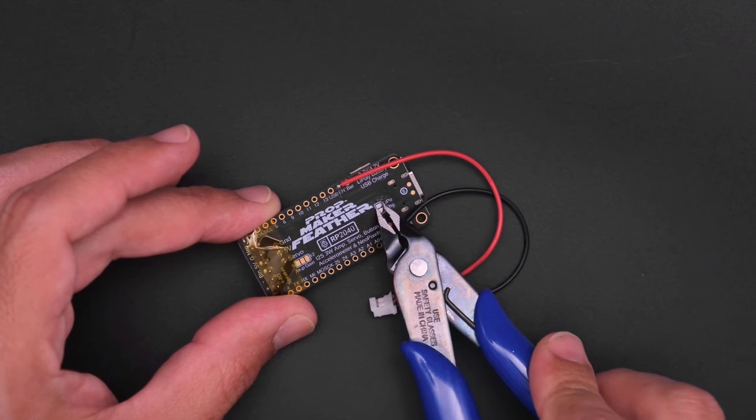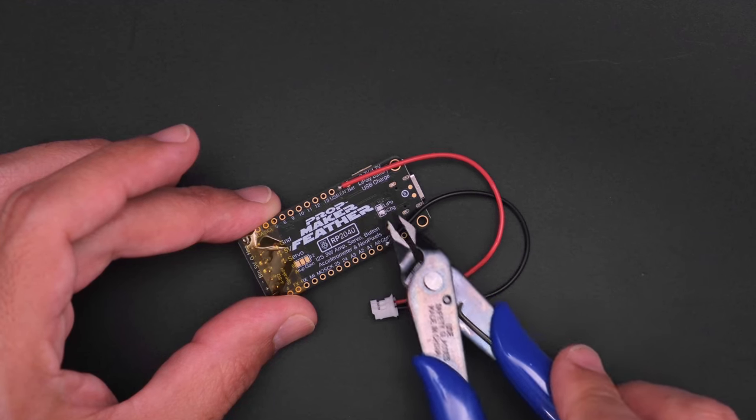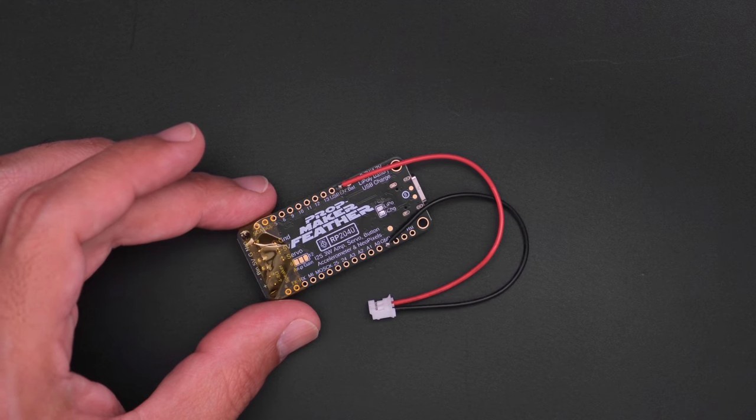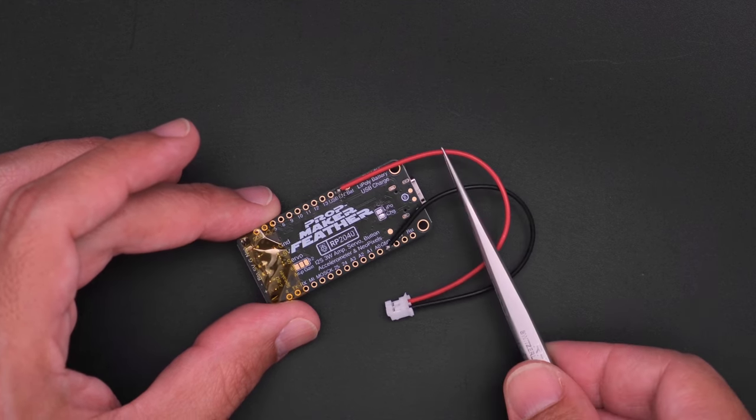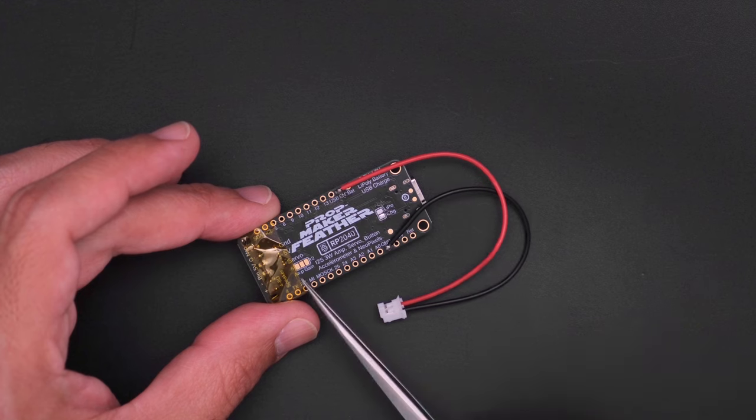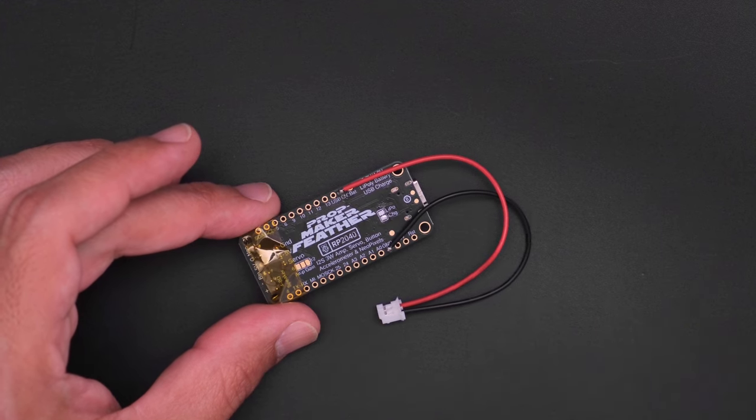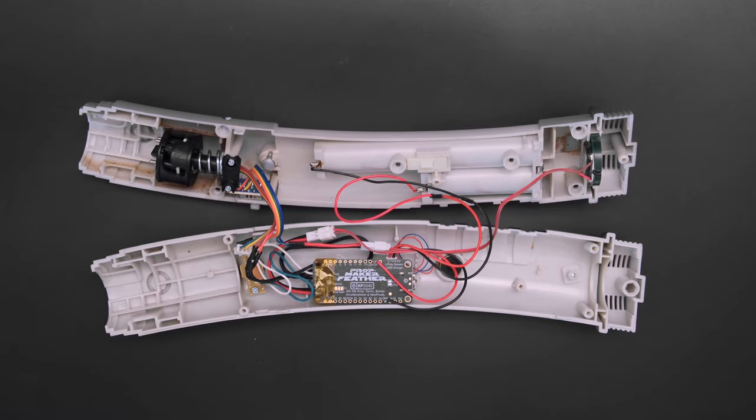You'll need to cut the trace on the back of the feather to disable lipo charging so we can safely use alkaline batteries. Add another JST cable for the power switch and insulate the exposed pins with some Kapton tape to avoid shorting. Then we can plug everything together and close it back up.